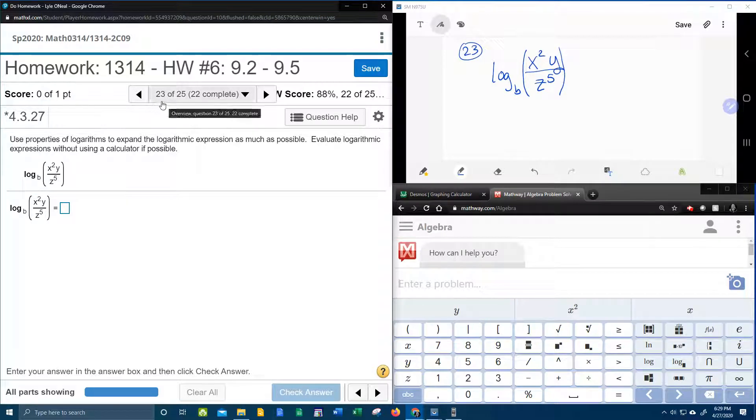All right, here we go. Question number 23 from our college algebra homework number 6 in MyLabMath says, use properties of logarithms to expand the logarithmic expression as much as possible. Evaluate logarithmic expressions without using a calculator if possible. And so here they've given me log base b of x squared y over z to the 5th, and I'm going to need to expand this as much as possible.